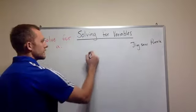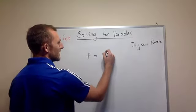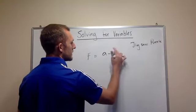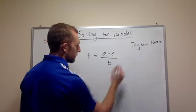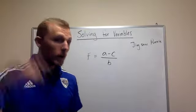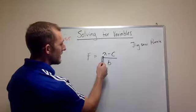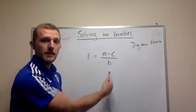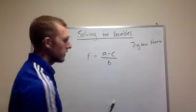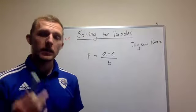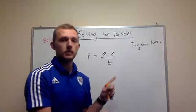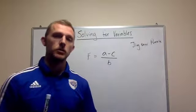What if it did this? What if F equaled A minus C all over B? Well, we have to look at this right now. Right now, A is connected to C, but it's also connected to B as well. So we have to start thinking, okay, well, C isn't out on its own anymore. So what's the one thing we can do?